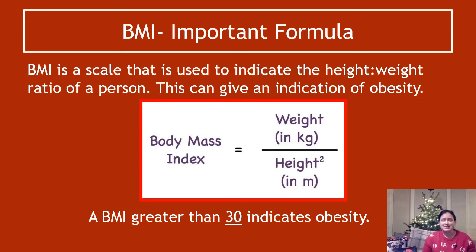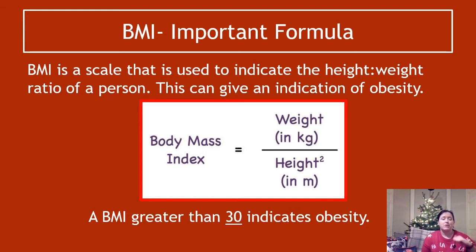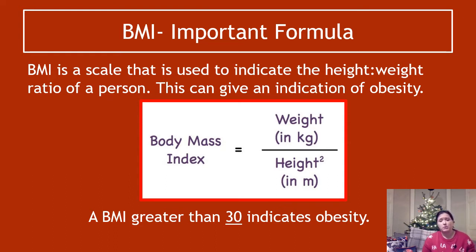A number to know is that a BMI greater than 30 indicates obesity — that is a number you need to know and might get tested on. You have to be able to use the formula to calculate somebody's BMI given their weight and height, but you might also get asked to calculate their height given their body mass, or a harder type of question: how much weight does this person have to lose or gain in order to reach a normal BMI. Those questions are significantly more difficult, so make sure you get practice questions from your teacher.